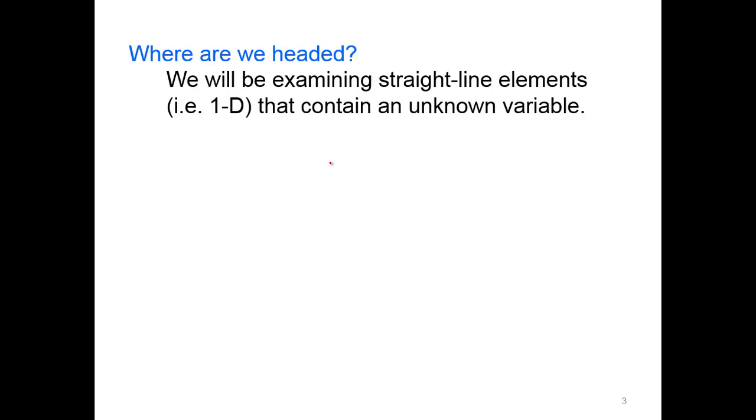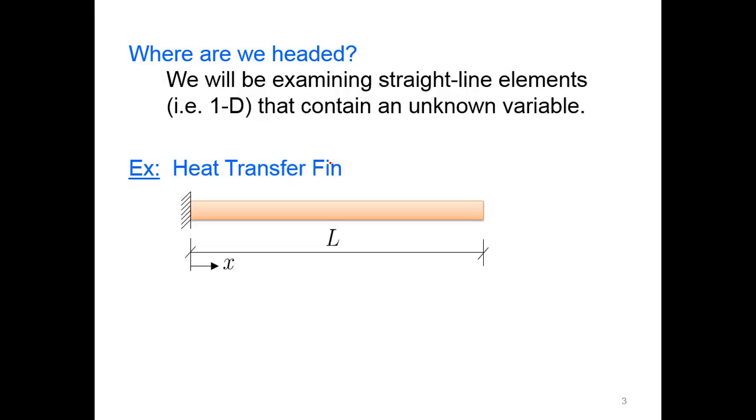So where are we headed? We'll be looking at straight-line elements, one-dimensional elements, that contain an unknown variable. For example, if we have a heat transfer fin here, you can see its overall length and shape, and we'll look at the overall temperature distribution through that fin.